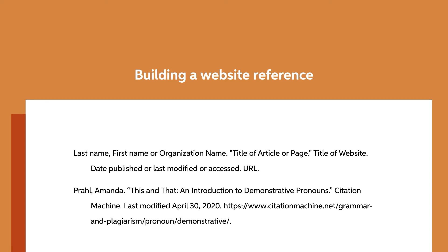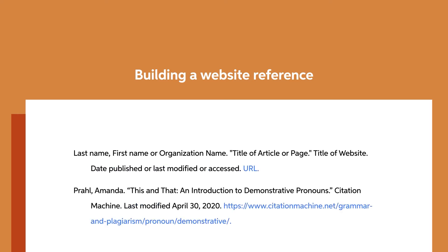After the author, list the title of the page or article in quotation marks. Next, list the name of the website where you found the article or page. Follow that with the publication date. If you can't find this, use the date the page was modified or accessed — preface this date with the words 'last modified' or 'accessed' so your reader knows what the date indicates. Finally, cap it all off with a URL. Don't forget to use a period after each piece of information.